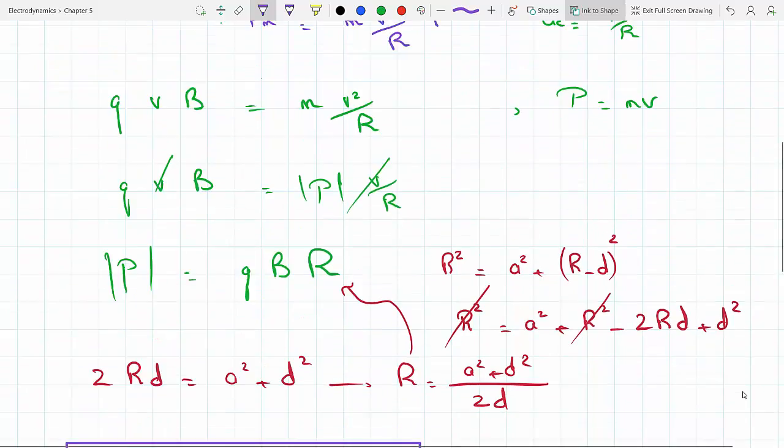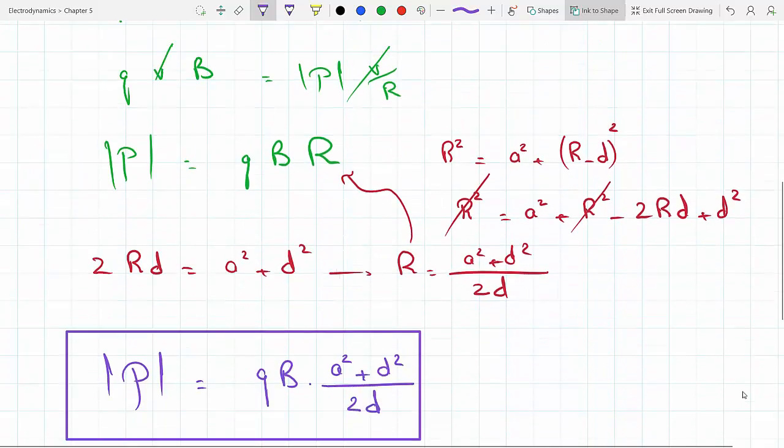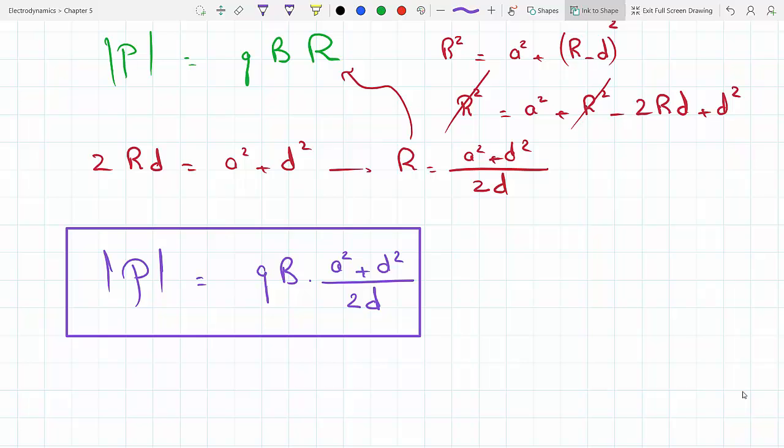And of course, the direction of the momentum will be tangent to the circular path. So if you consider this to be your r hat direction, this will be your theta direction, because in polar coordinates those are perpendicular. So it's going to be in the direction of theta.